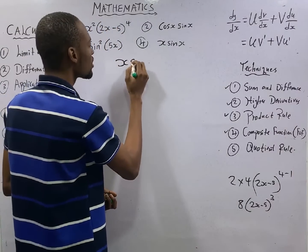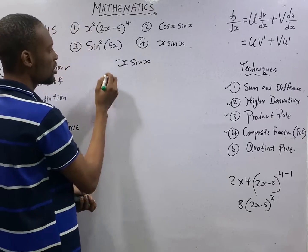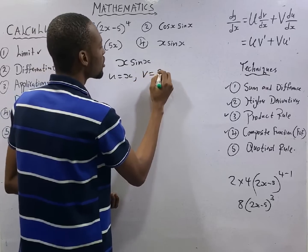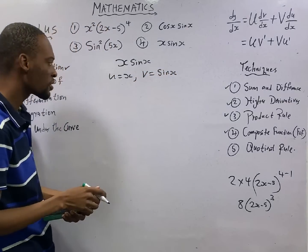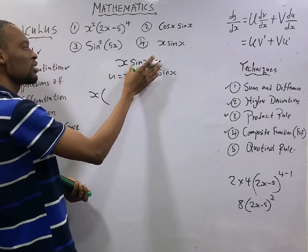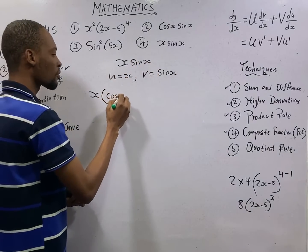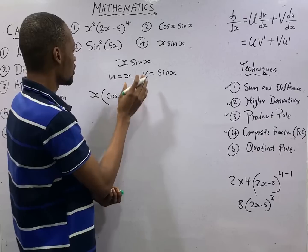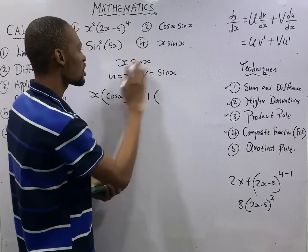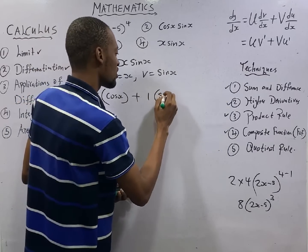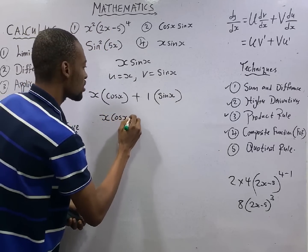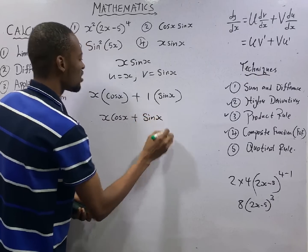Let's look at s sine s. Call u equal to s and v equal to sine s. Product rule states: keep u constant, so leave s — don't do anything — times differentiate v, that is cos s. Plus, differentiate the one you did not differentiate before — when you differentiate s you get 1 — times keep v constant, which is sine s. This is basically s cos s plus sine s.